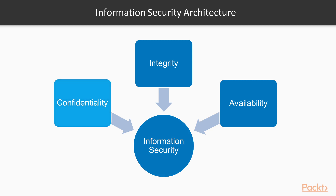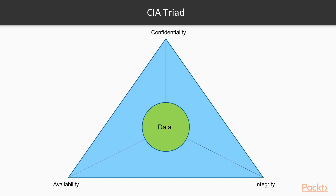Confidentiality ensures that data is not exposed to unauthorized access or modification. Integrity ensures the data can be trusted as it flows through the system across its components. Availability ensures that the system will not deny service to its authorized users. These three aspects — confidentiality, integrity, and availability — are often called the CIA triad and form the cornerstones of building information security architecture.